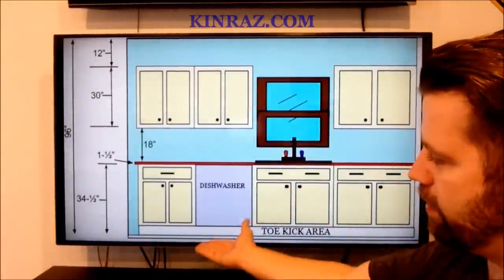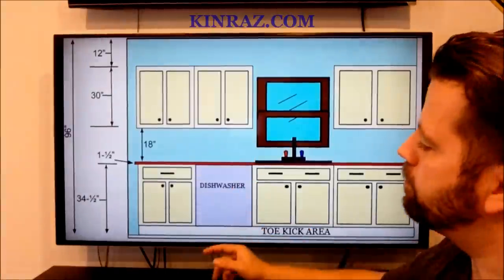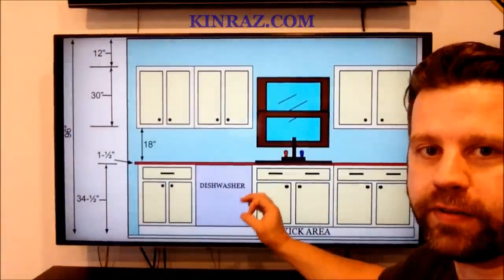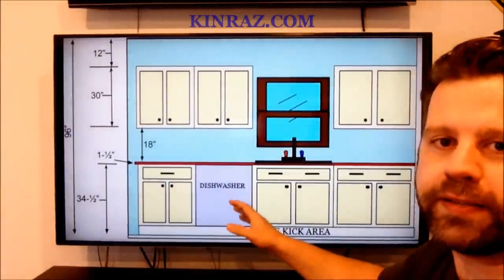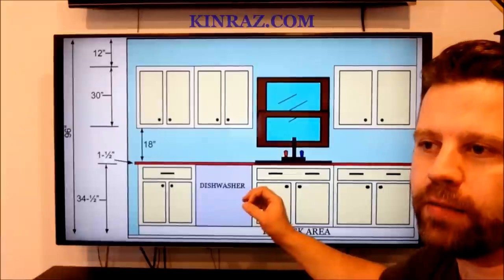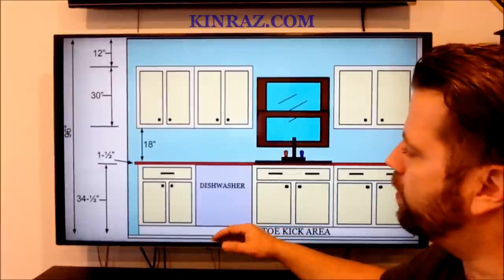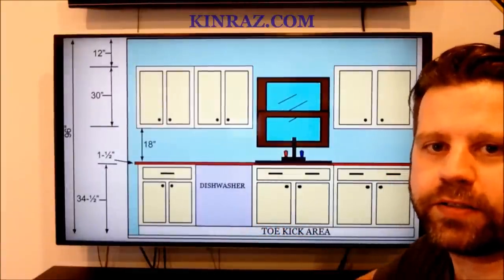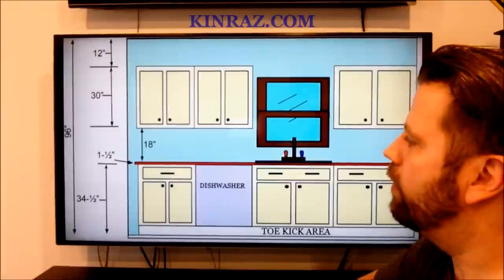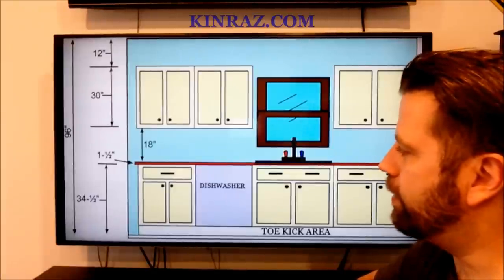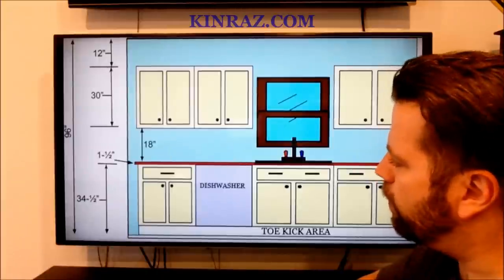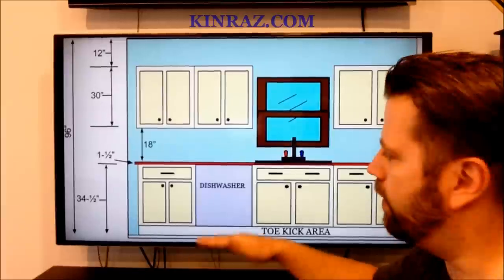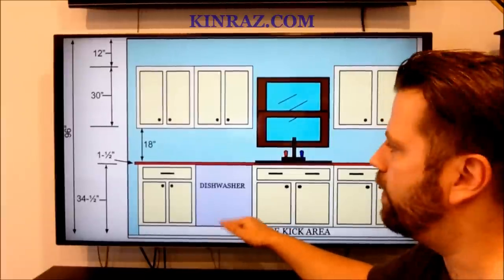What we're going to do is start at the bottom and work our way up. Now there is a term called above the finished floor. You may see that on blueprints as AFF, and what that means is your finished floor is basically what it says it is: your finished ceramic tile, your finished hardwood, but it's not including your subfloor. So your kitchen cabinets are designed to set on that finished floor when they're installed.